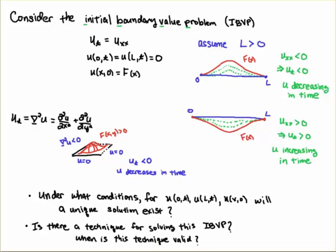And if there is a technique, when is the technique valid? Because of course we want to have solutions, and we want those solutions to exist, but we want them to be unique, because we don't want to have multiple temperature profiles. We don't want multiple ways in which this temperature profile can evolve, as you can imagine.